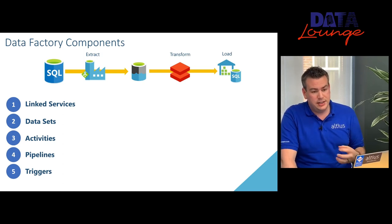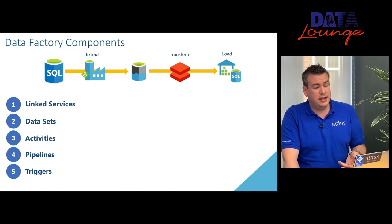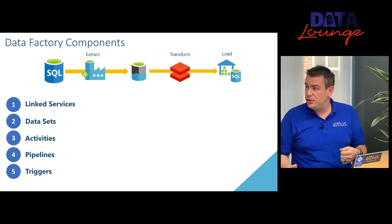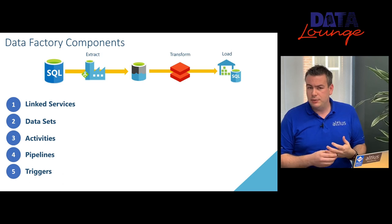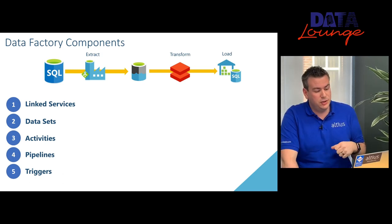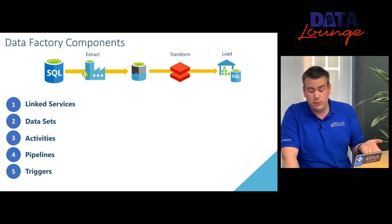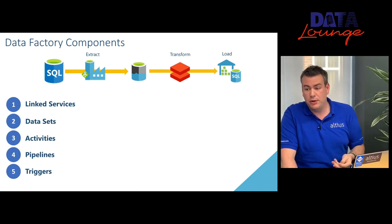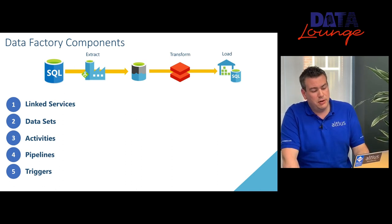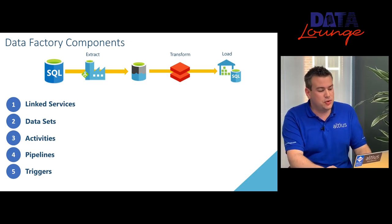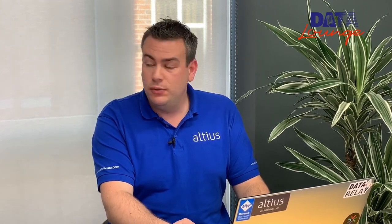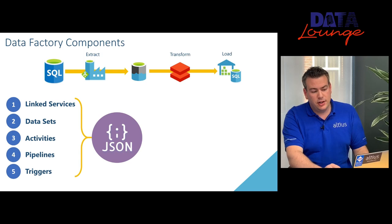Number five is a trigger. We attach a trigger to a pipeline or many pipelines, and it allows Data Factory to know when we want it to run. This could be a recursive scheduled window — similar to SQL Server Agent on premises — tumbling windows for time series data, or triggers fired when files are dropped in blob storage. Those are our five components. Data Factory's hymn sheet for orchestration is JSON; every component is built up in JSON.